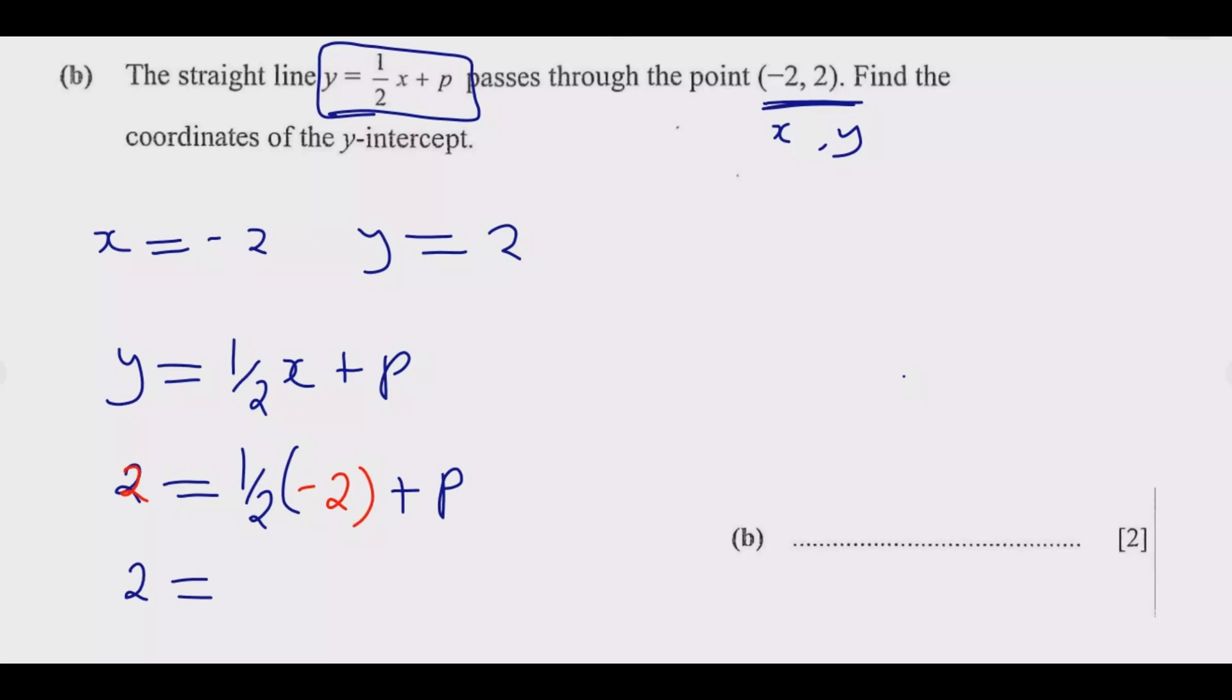So 2 = ½ × (-2) = -1 plus p. Then we solve for p. When you do this, you're going to have 2 + 1 = p, therefore p = 3. So if p = 3, it means we have now the equation y = ½x + 3.